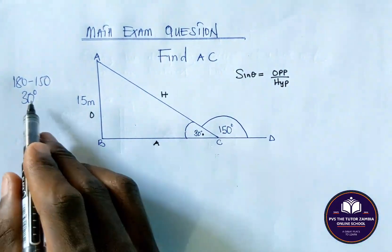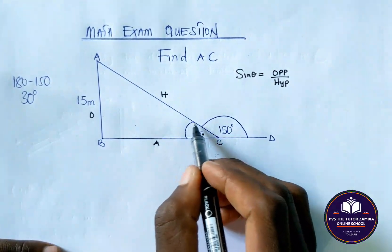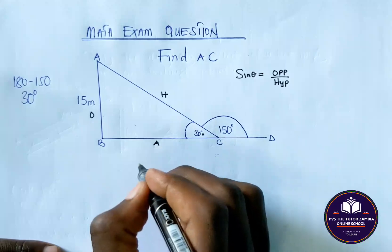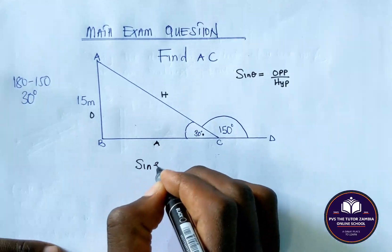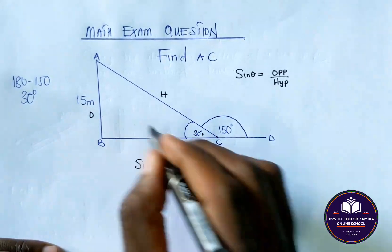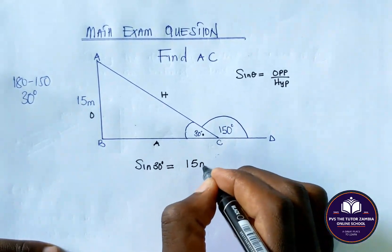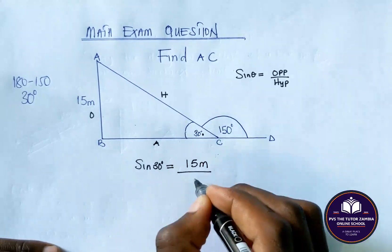So now, this is the theta that we are using. So sine 30 degrees is equal—what's our opposite? Our opposite is 15 meters, all the way by H.